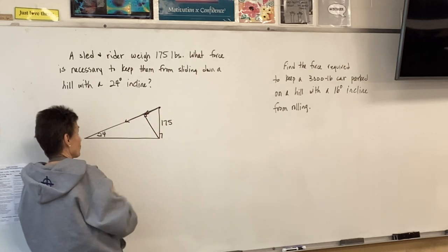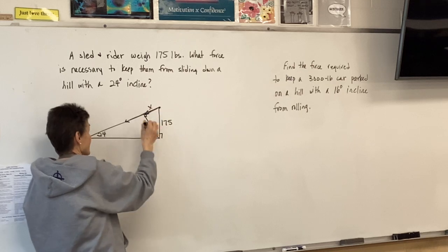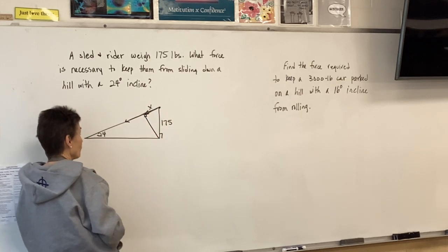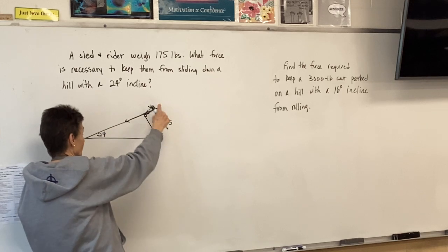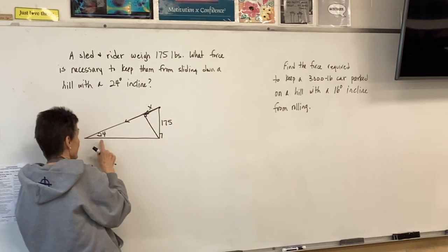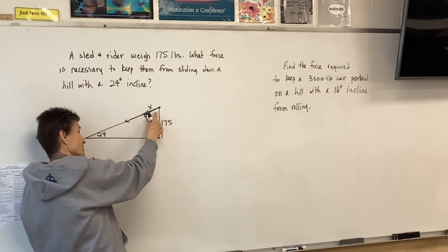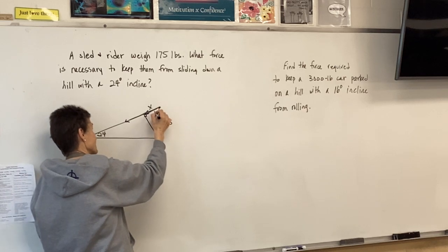It's on the hypotenuse of the big triangle, so we're going to call that x. That little piece right there, that's what you're looking for. And I know in the big right triangle, the whole picture, if that's 24, this one's got to be 66.